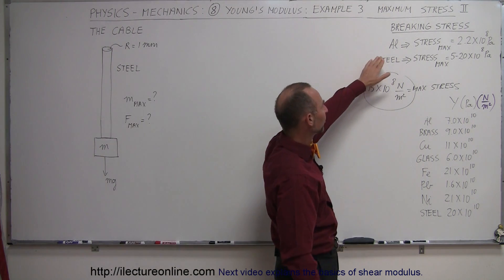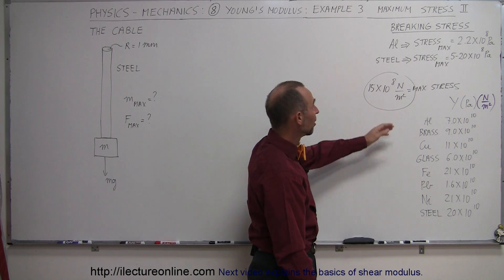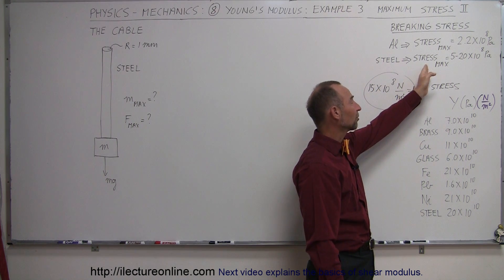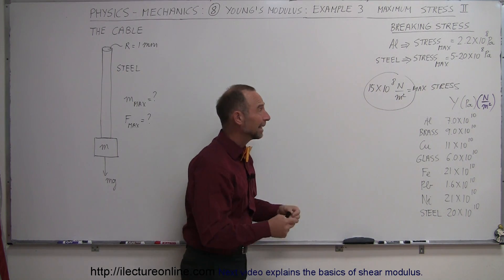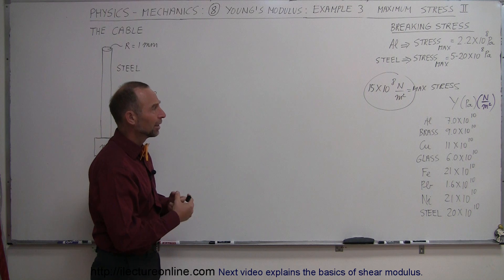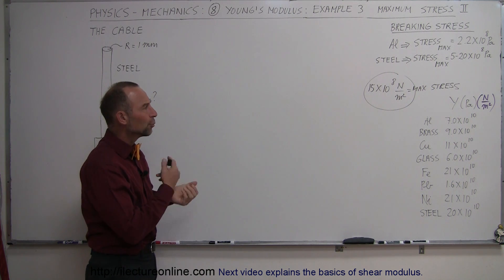Well, here we have a couple of examples. For aluminum, the breaking stress is 2.2 times 10 to the 8 pascals. For steel, the maximum stress or the breaking stress is anywhere from 5 to 20 times 10 to the 8 pascals. And of course, steel is a mixture of metals that we alloy together, and so there will be different properties for different reasons.